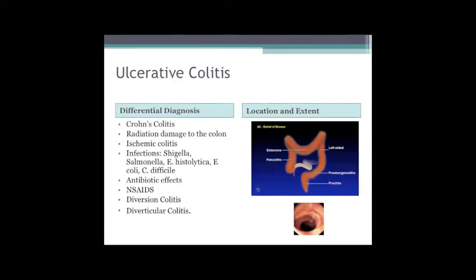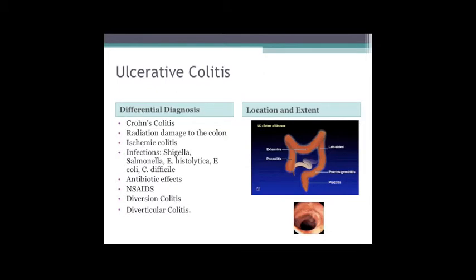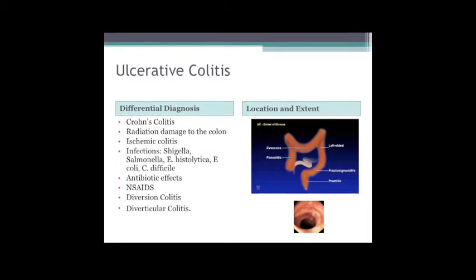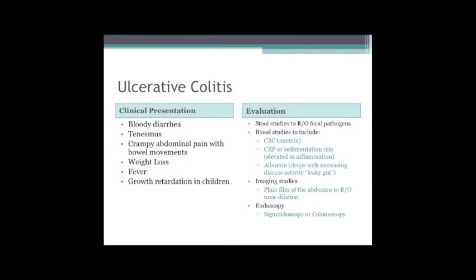For ulcerative colitis, the differential is infectious plus a variety of other things that can damage the colon. The patient may have just the rectum involved or pancolitis. Crohn's disease patients may present with diarrhea but rarely with a lot of bleeding. Ulcerative colitis almost always presents with bleeding - mucus production, urgency, and then bloody diarrhea. Tenesmus is caused by the rectum becoming rigid and inflamed.